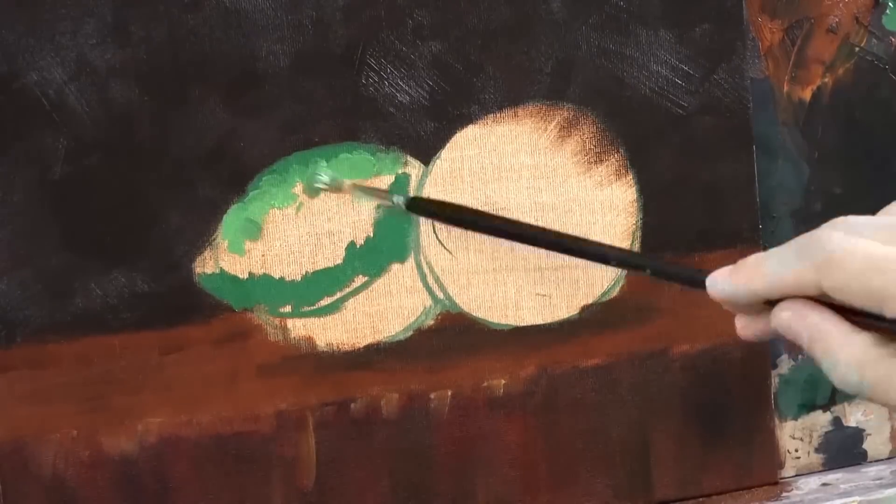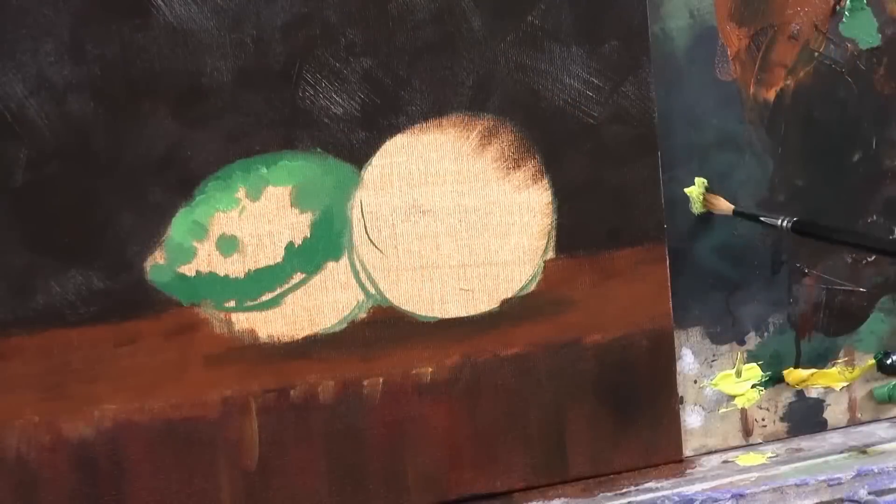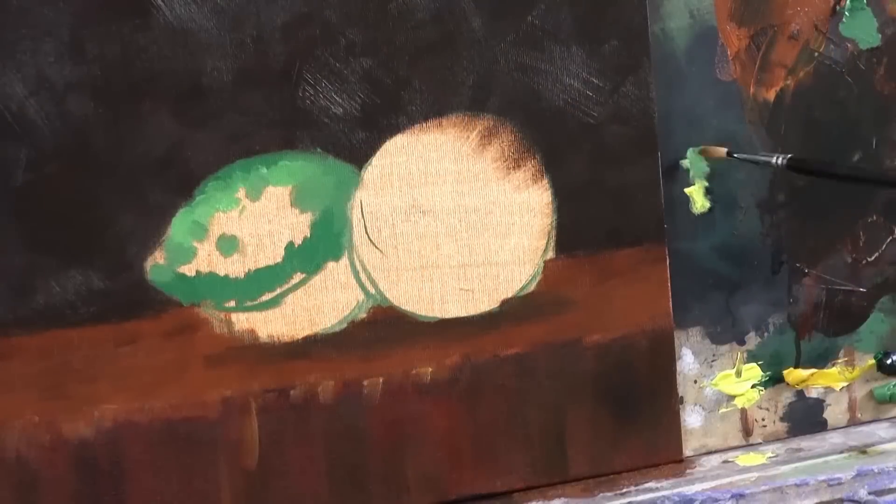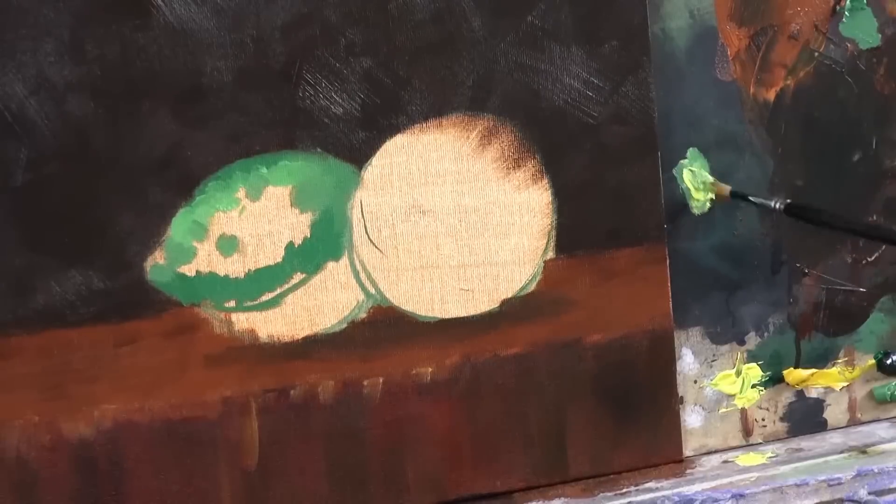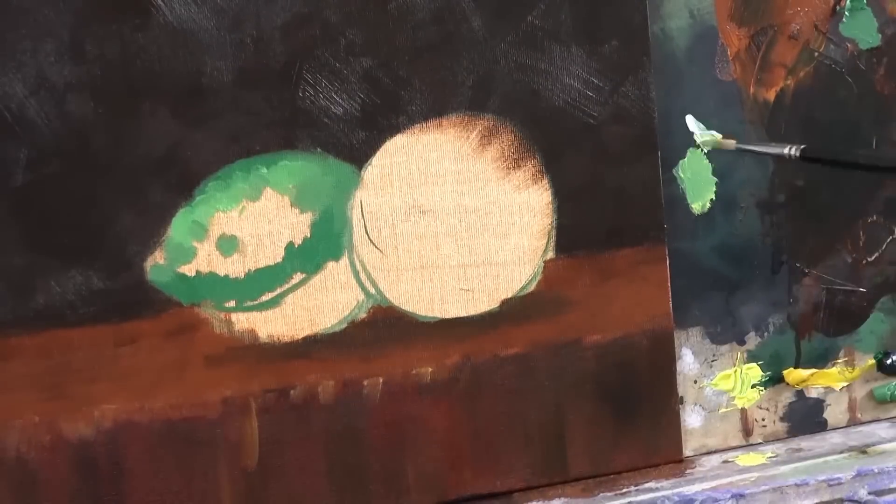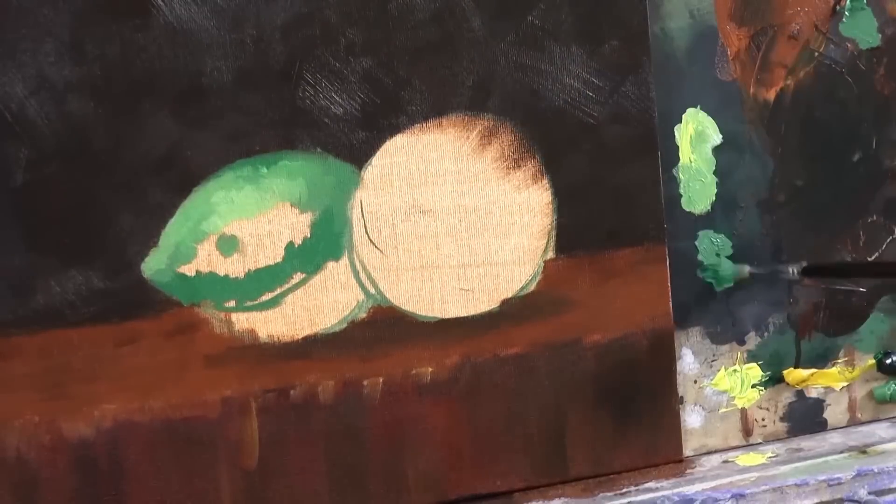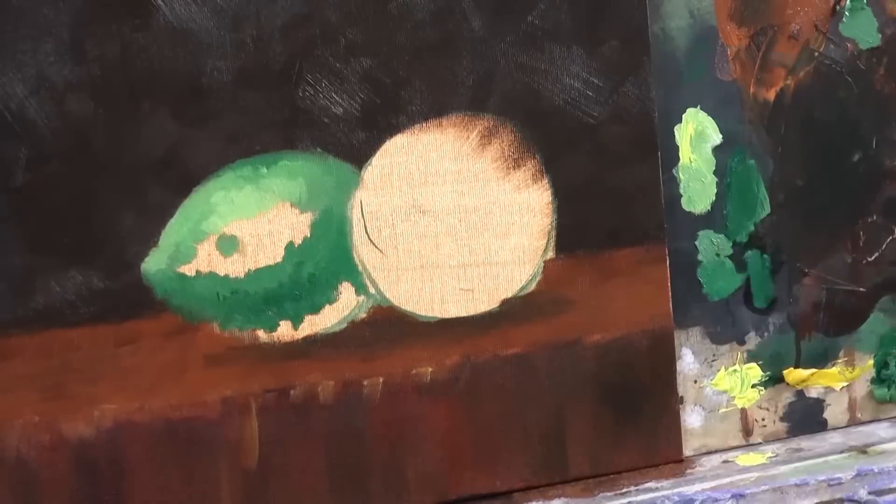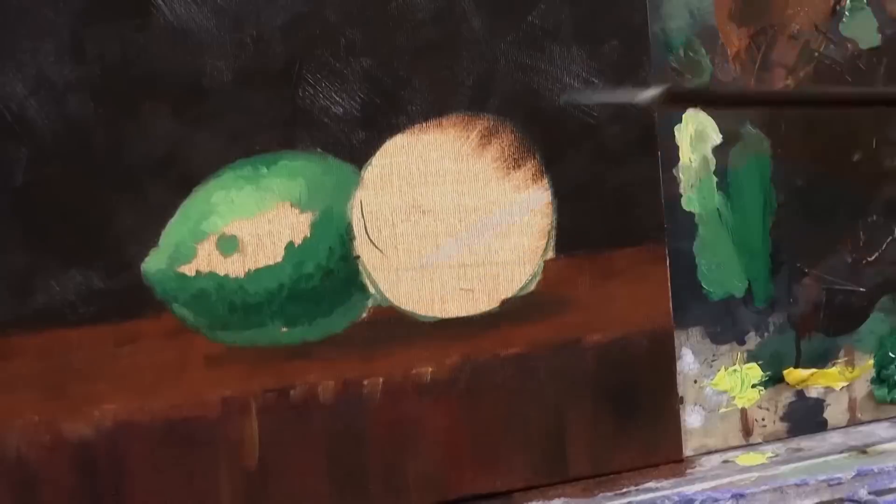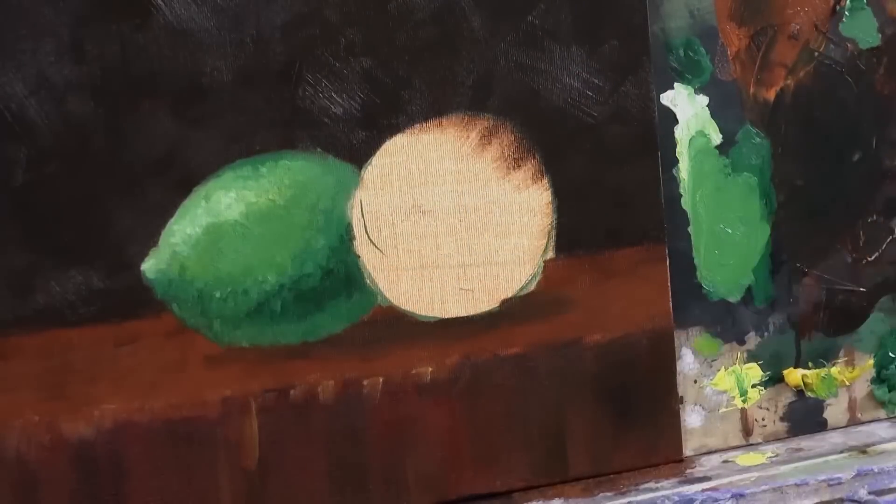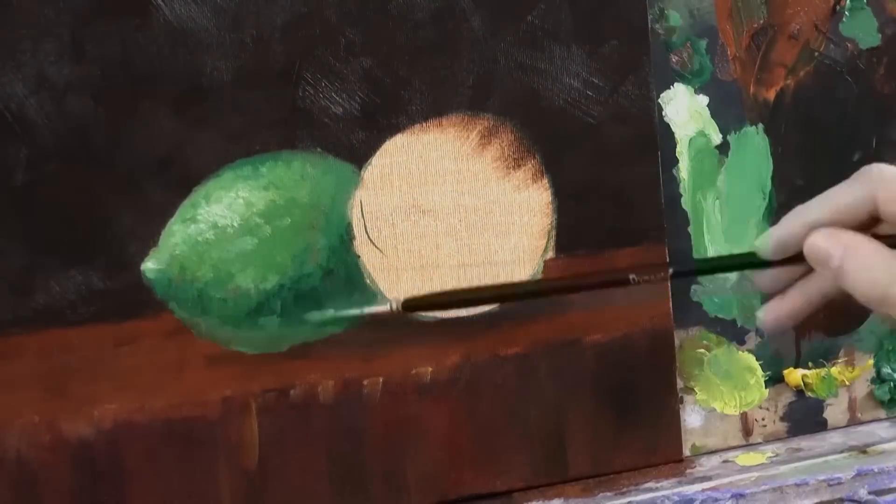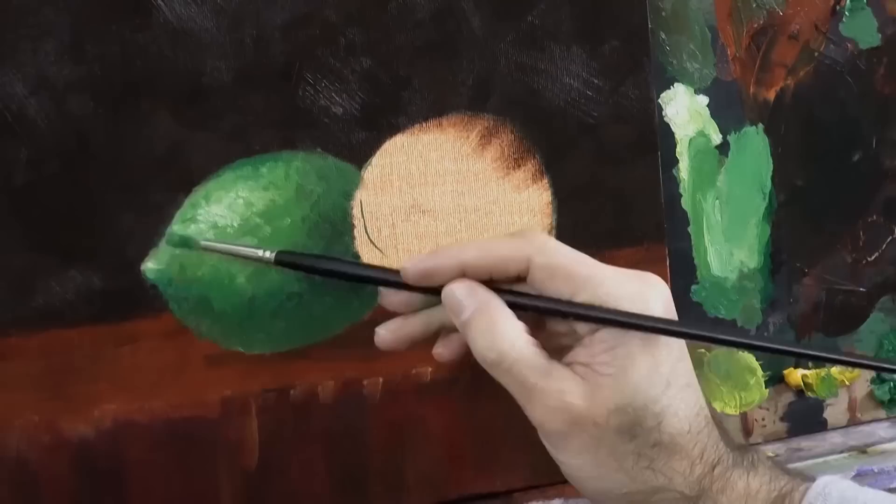For the areas of light I can modify the green with some light yellow. As you can see, I apply the paint with short strokes. I don't pick up paint and then extend it on the canvas as if I were painting a wall. Rather I apply it in very short strokes, picking up more paint often, so as to apply it pretty thick. This is to give the texture of the lime.